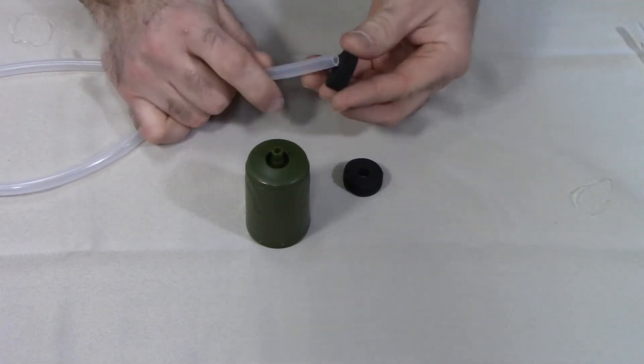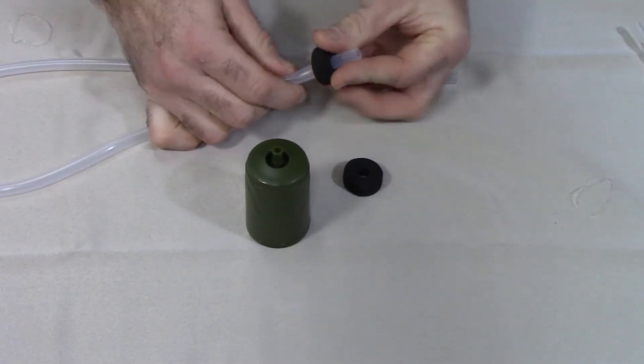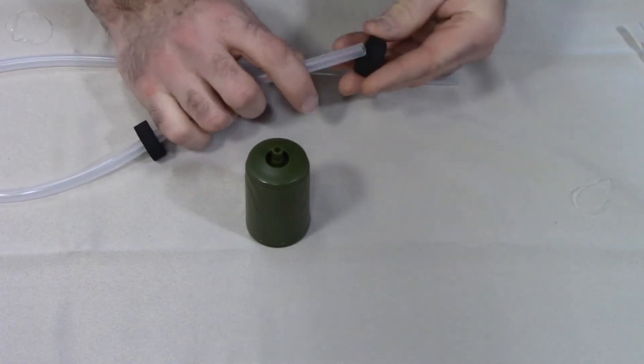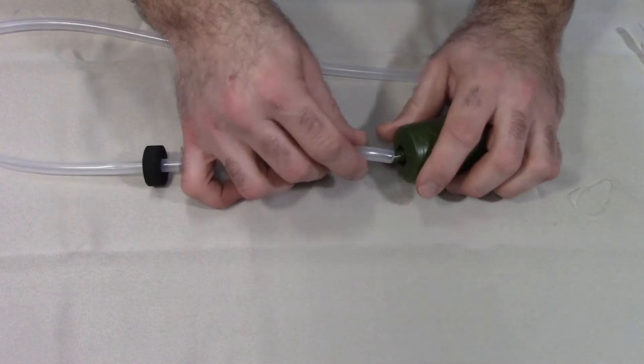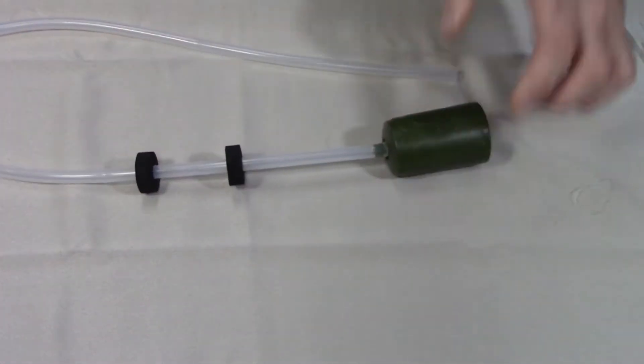To assemble it, first you'll take the longer of the two hoses and slide on both of the floaters. Next you'll take the pre-filter and slide the end of the hose over it.